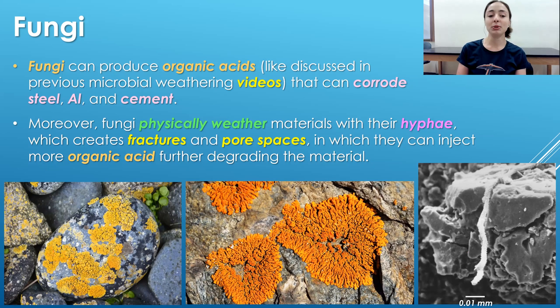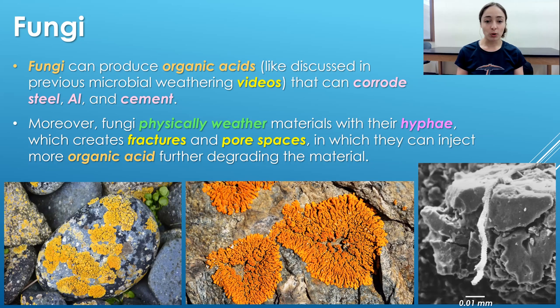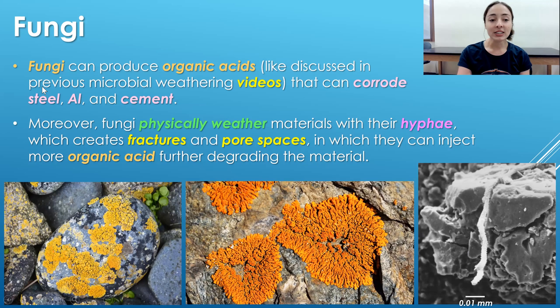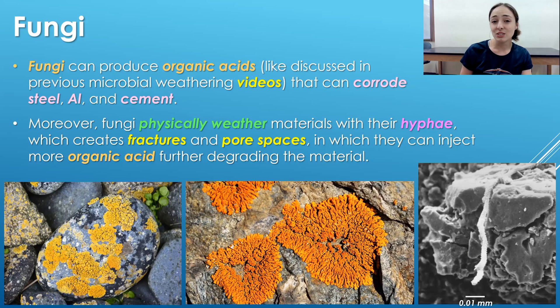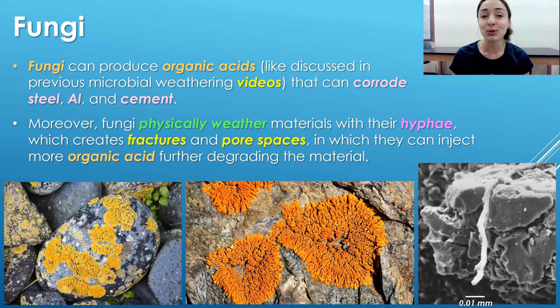The last group of microorganisms that contribute heavily to corrosion are fungi. As discussed in the previous videos, fungi produce organic acids and have hyphae that can physically penetrate and fracture rocks, creating fractures and pore spaces into which they inject more organic acid to continue dissolving material. Because they are so effective at weathering, they can corrode steel, aluminum, and cement. They are also extremely tolerant and resilient across a wide range of conditions, making them very effective contributors to corrosion.